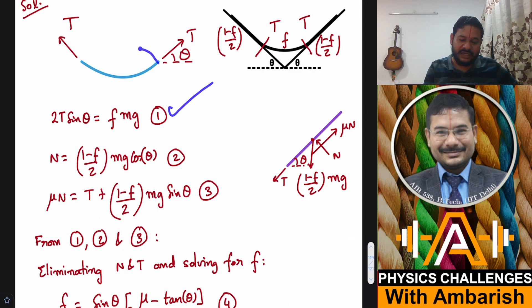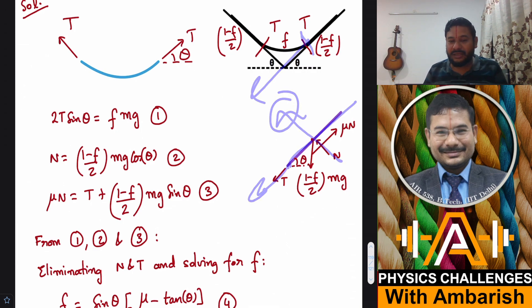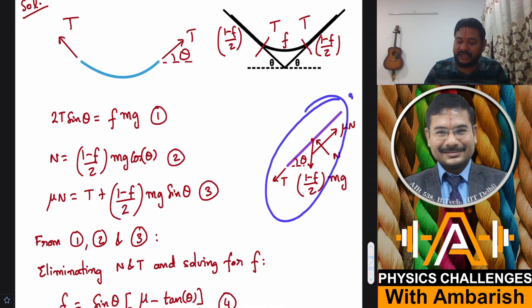Now consider the FBD of this part that's lying on the incline. Here we have this tension T acting downward. There's some normal reaction and when we are maximizing, obviously we are using friction to the fullest, so the friction is limiting, it's at the verge of slipping. So here there is normal reaction and this is mu N. Now I'll consider the force balance in this direction as well as this direction.